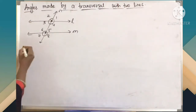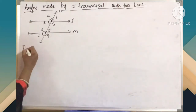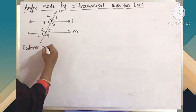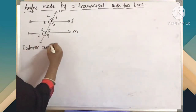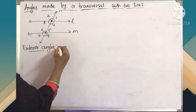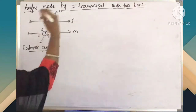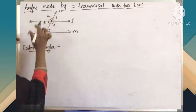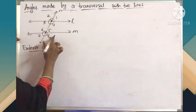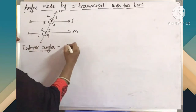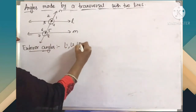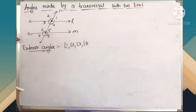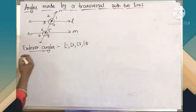The first type I am writing, children, is exterior angles. So what are exterior angles? Here if you see, exterior angles are 1, 2, 7, and 8. So angle 1, angle 2, angle 7 and angle 8 are exterior angles.